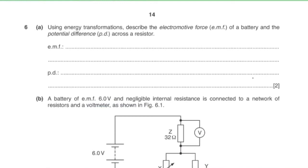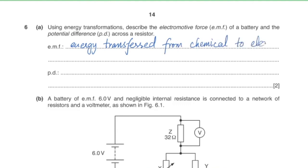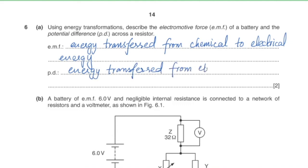Question six, part a: using energy transformations, describe EMF and potential difference. EMF is the energy transferred from chemical energy to electrical energy per unit charge in a battery. Potential difference is the energy transferred from electrical energy to thermal energy per unit charge across a resistor.